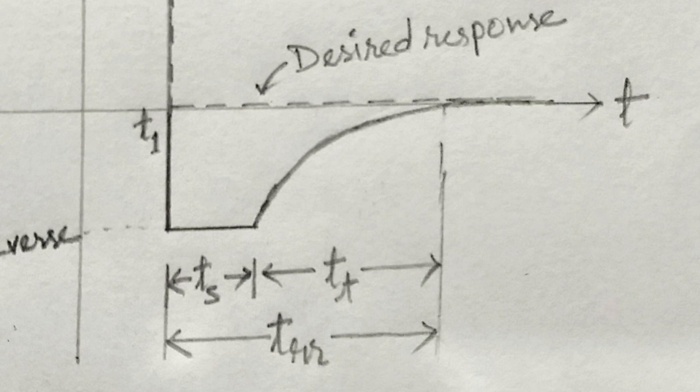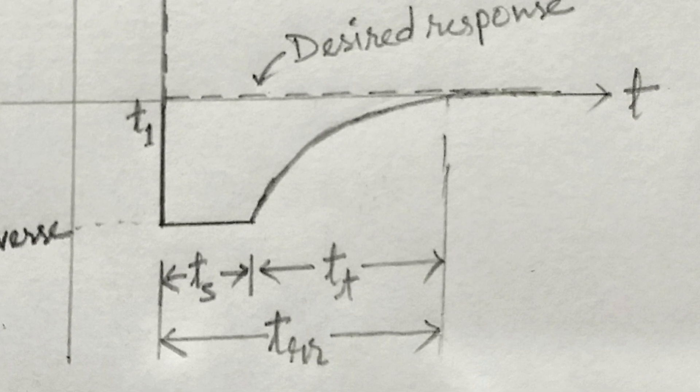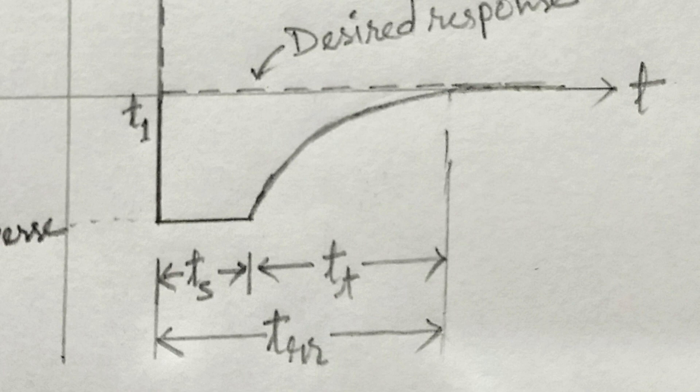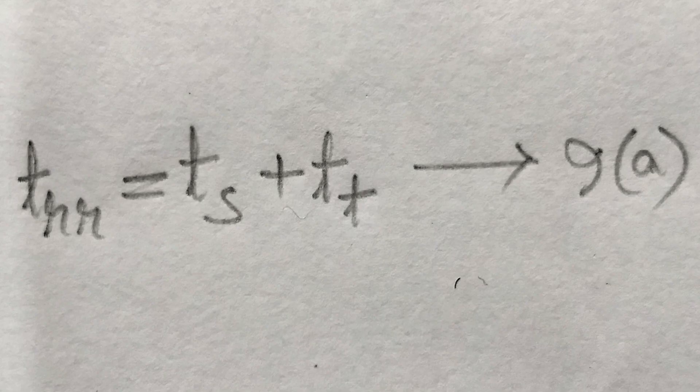So we can say that the reverse recovery time is the sum of TS and TT. That is, TRR equal to TS plus TT.